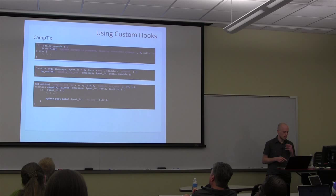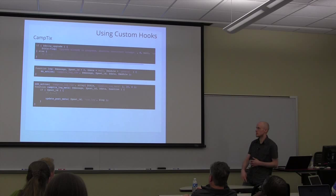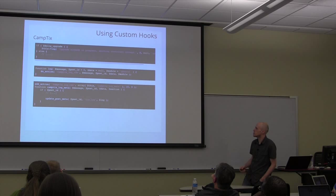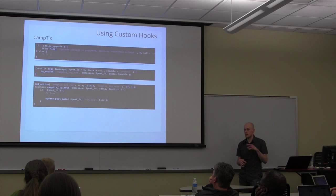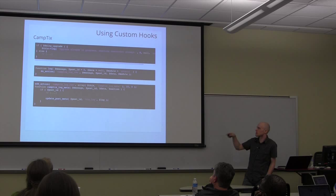For example, the logging function: during the upgrade routine, if an upgrade is already running, instead of running it a second time and creating race conditions, we just skip it but log it for troubleshooting. When we call the log function and pass it an error message, all it does is call an action and pass it the same data. Normally you'd think the log function should write to the database directly, but here all it does is call that action. Then a separate function inside CampTix hooks into that action and writes it to post meta on the attendee record.